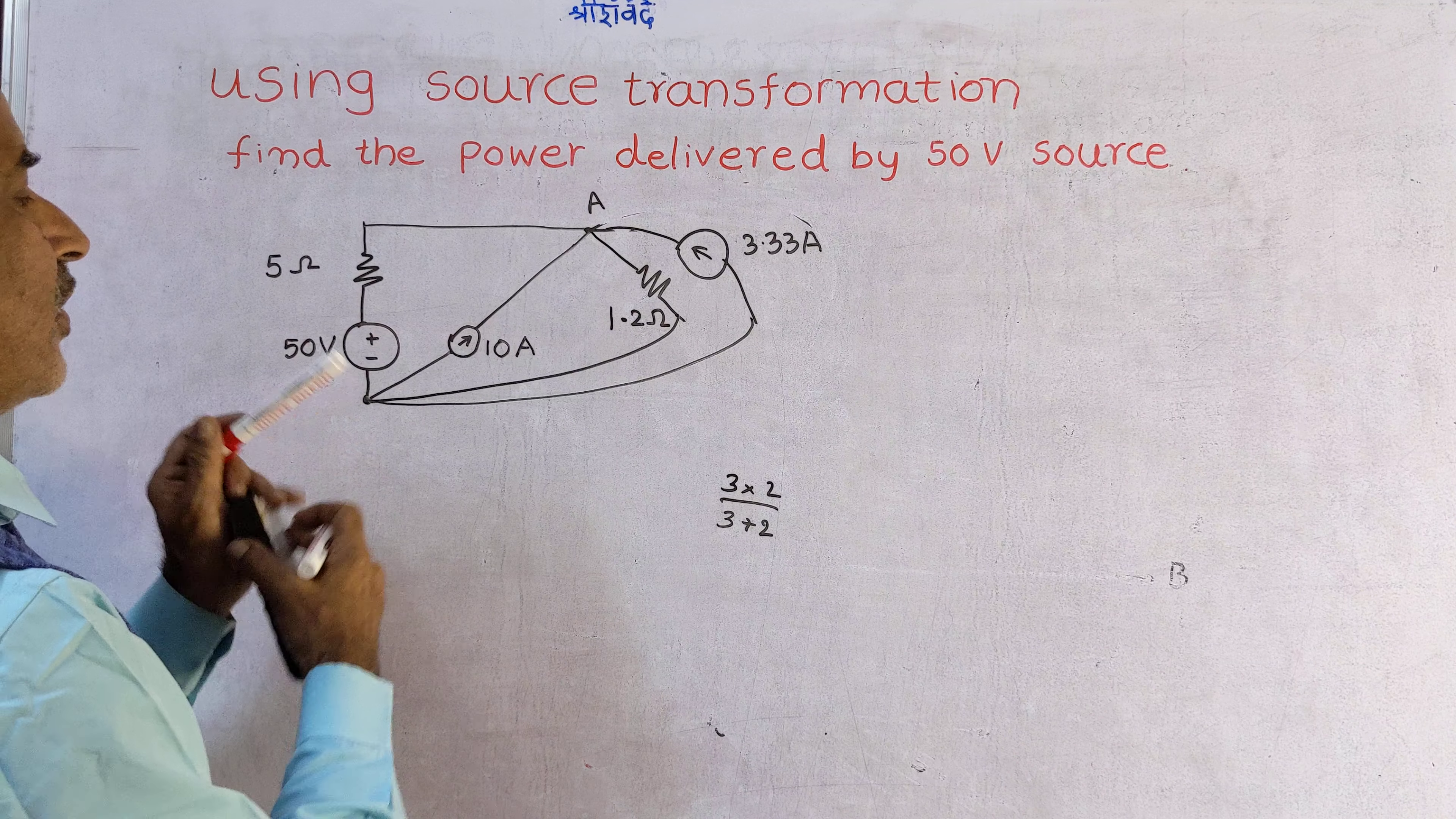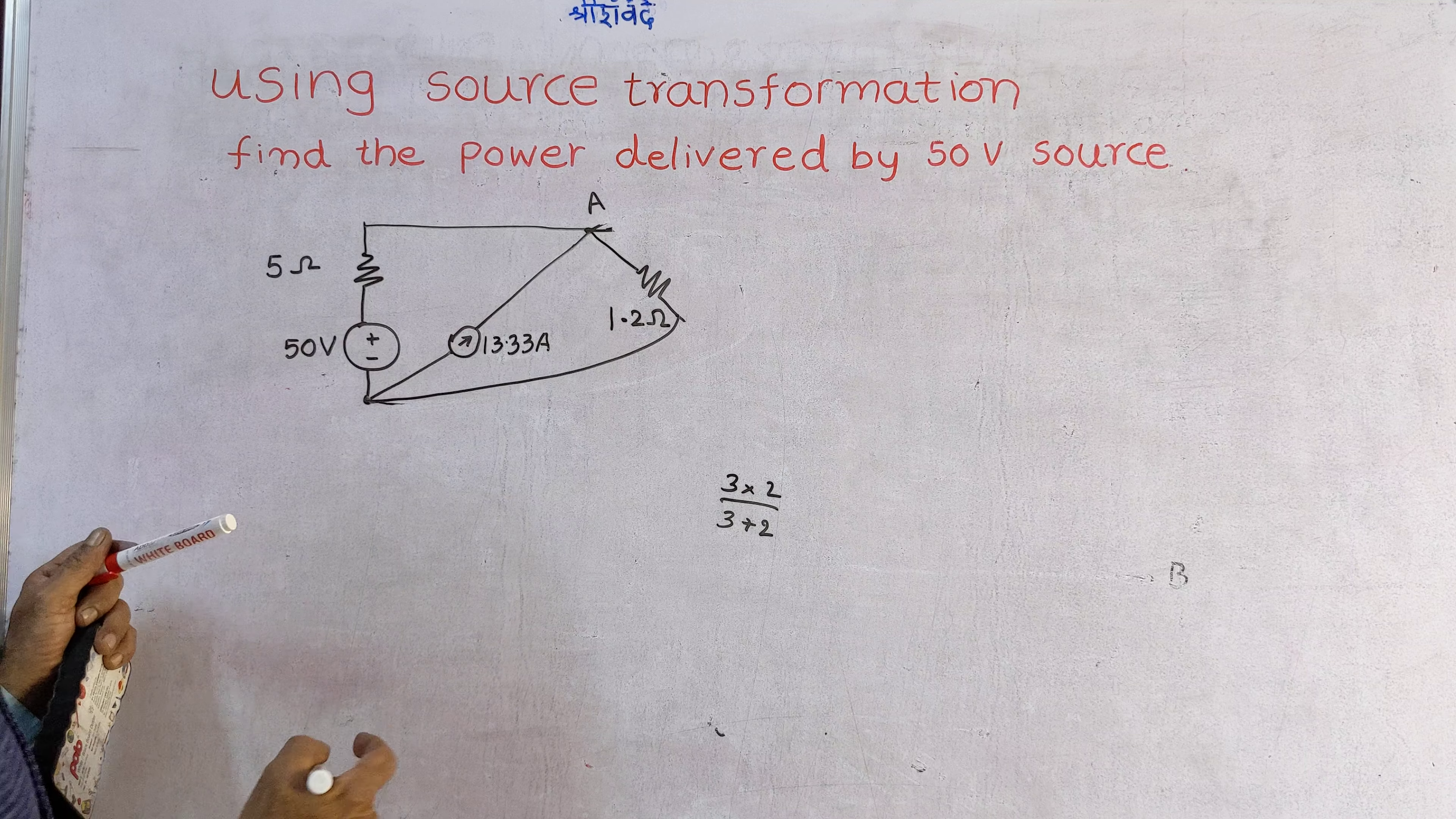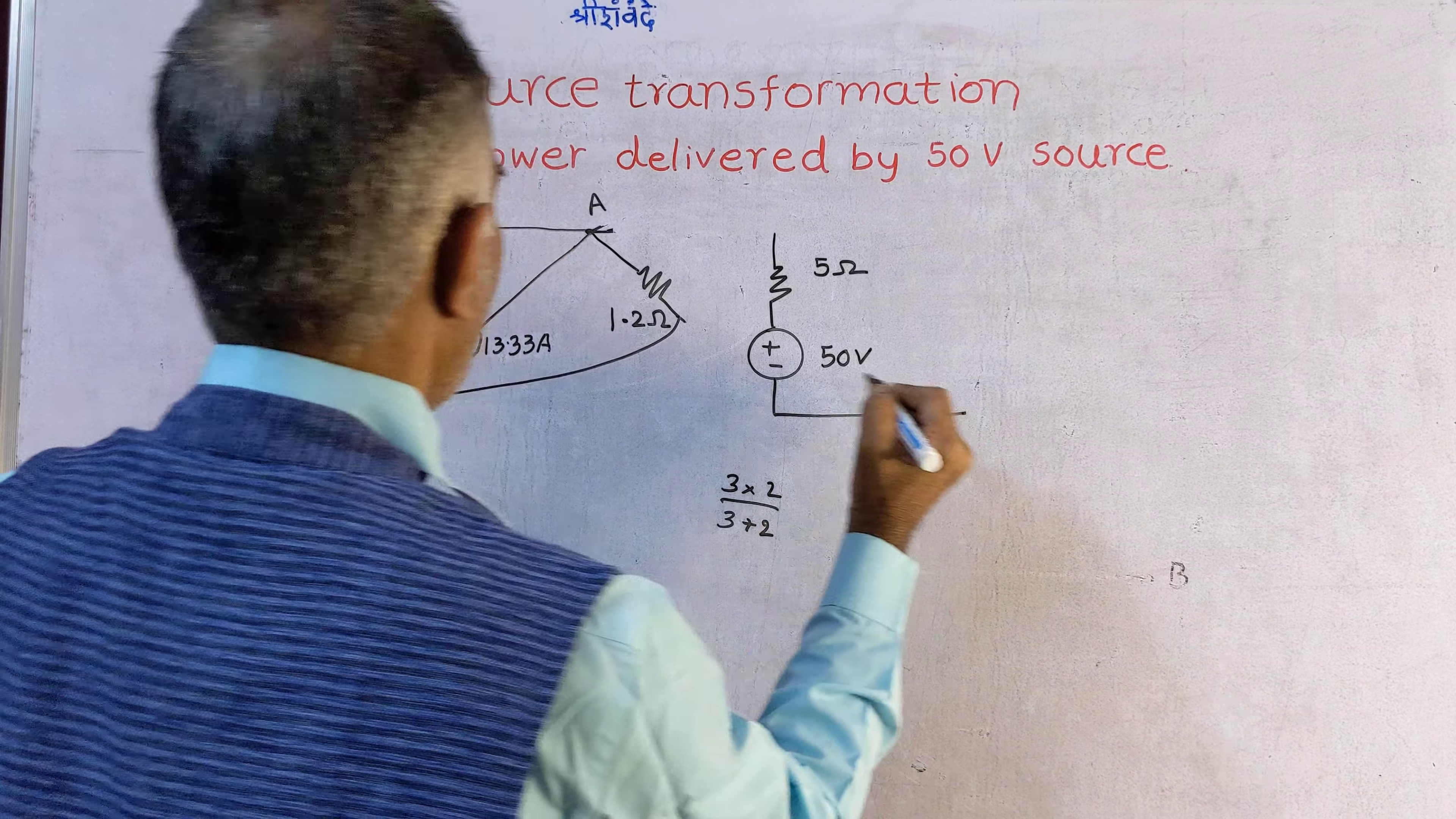Next, convert this to voltage source. 5 ohms in series with 50 volts. Then 13.33 into 1.3 ohms.